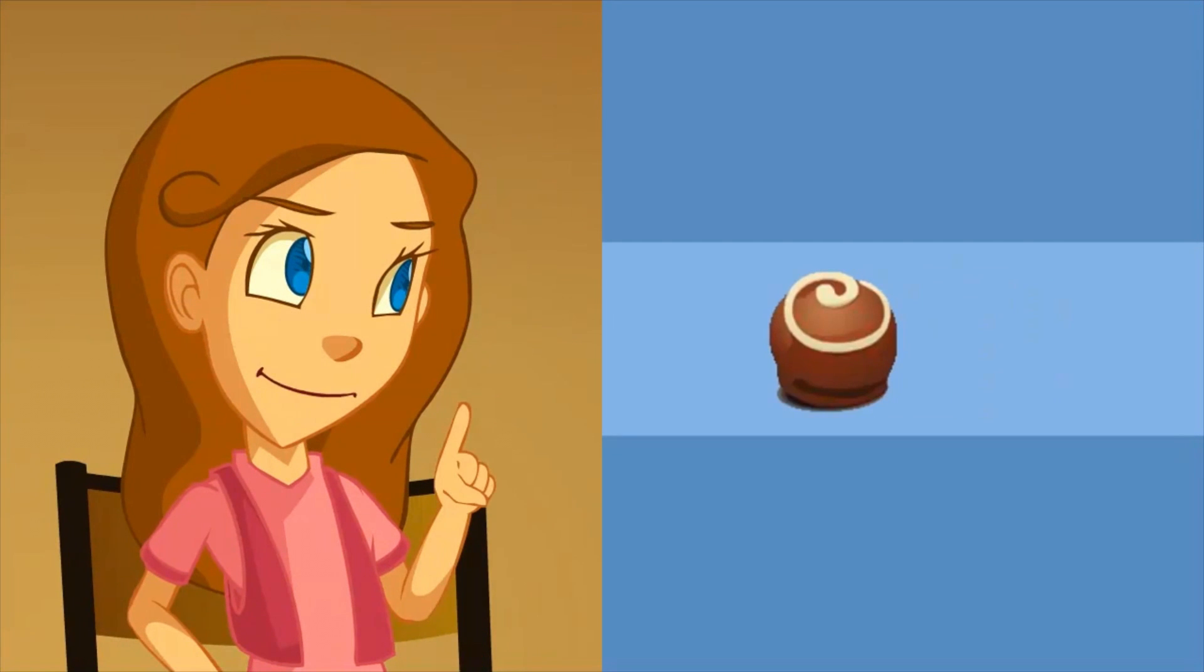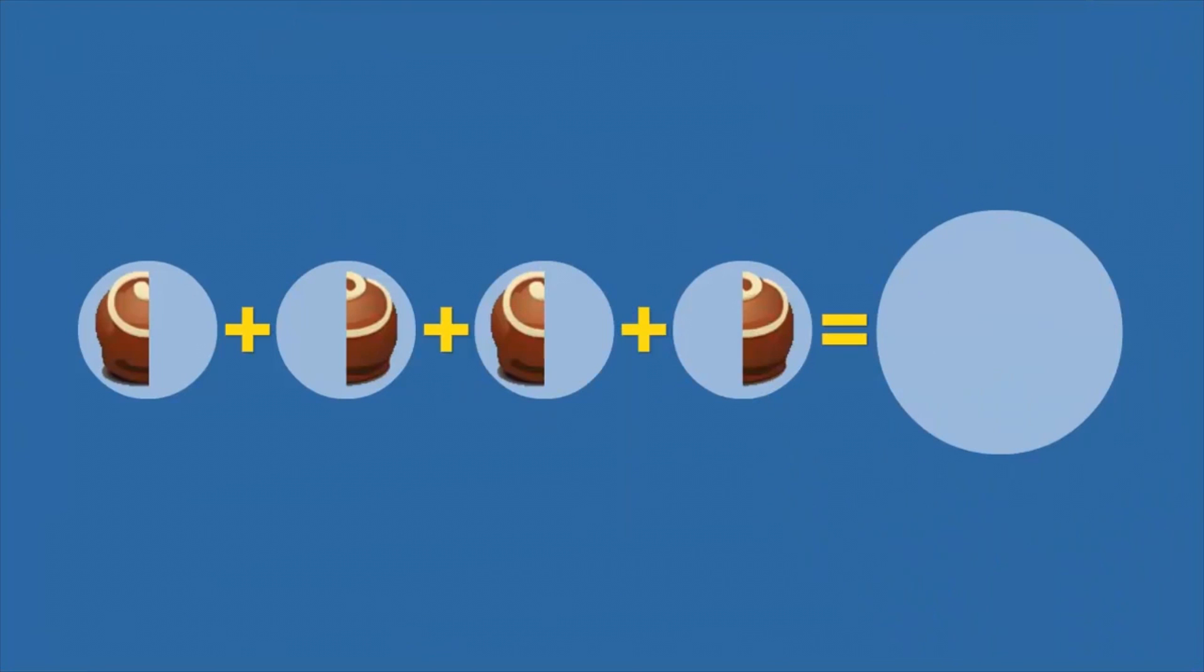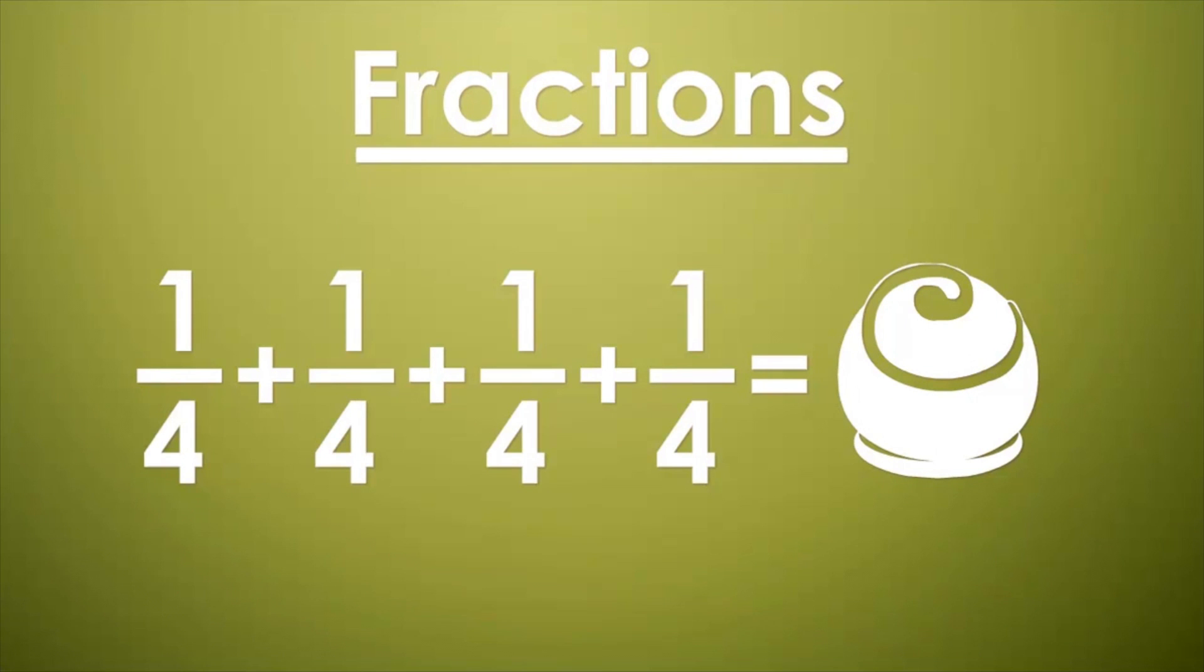I know. One chocolate and half more. If I add up the four halves of the chocolates, I'll have two whole chocolates. That means that four times a quarter makes up one chocolate. I didn't know that.